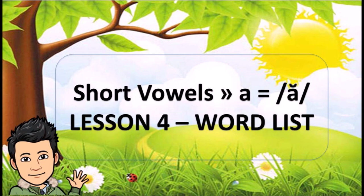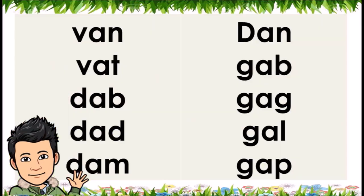The man at bat had a tan cap. Pat can fan the man at bat. Short vowels: A equals A. Lesson 4. Word list: Ven, vet.